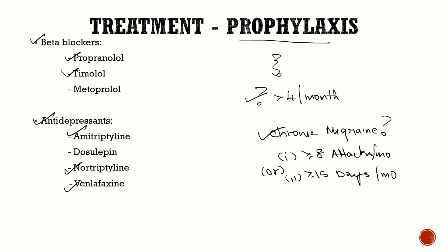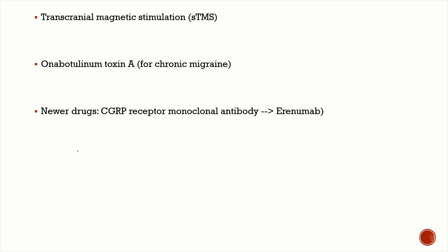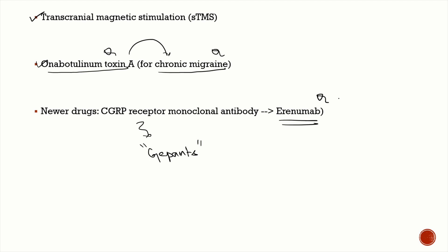Other prophylactic drugs include antidepressants like amitriptyline, nortriptyline, and venlafaxine, and anticonvulsants like topiramate and valproate. Topiramate uniquely causes weight loss, but can cause glaucoma and renal calculi. Other options include serotonergic drugs like pizotifen, calcium channel blockers like flunarizine, ARBs like candesartan, single-pulse transcranial magnetic stimulation, botulinum toxin A (specifically for chronic migraine), and CGRP receptor antagonists including gepants and erenumab.